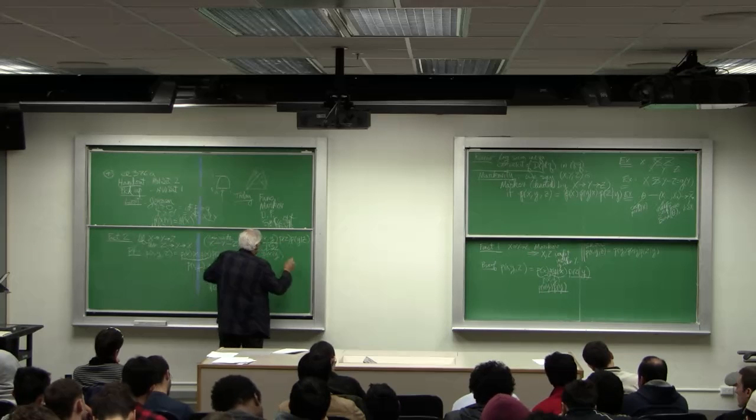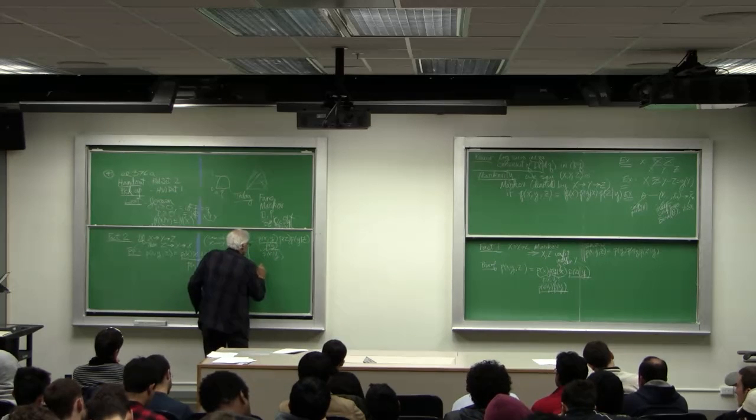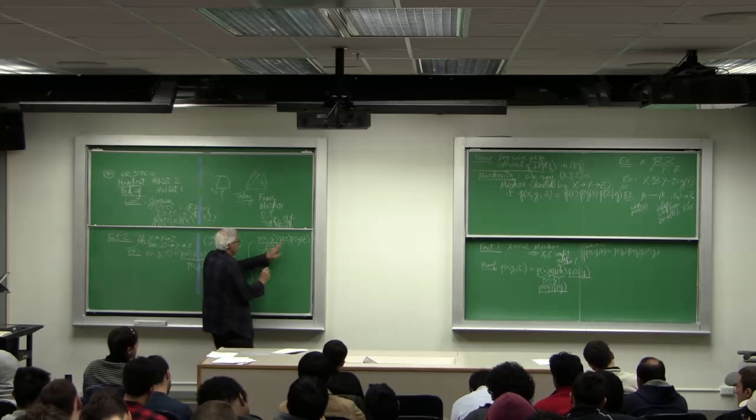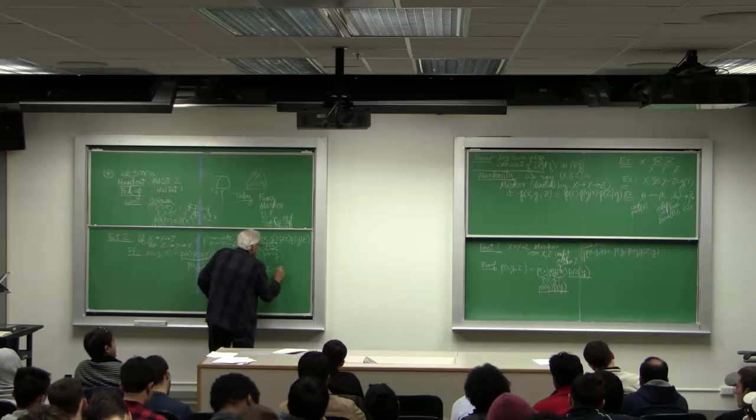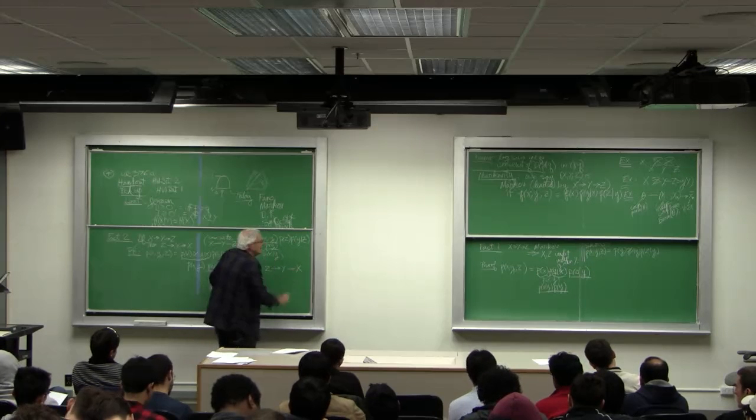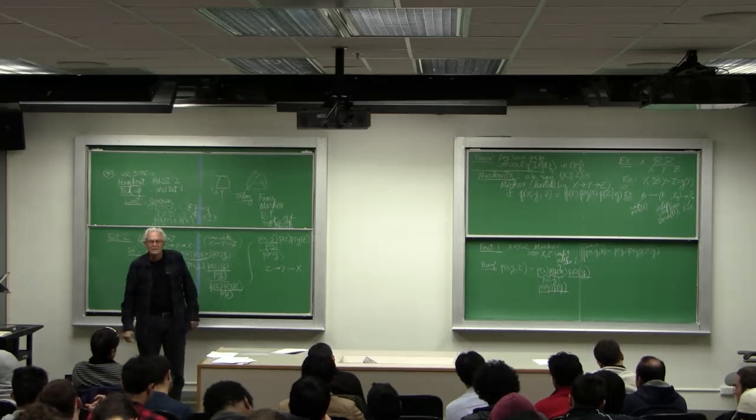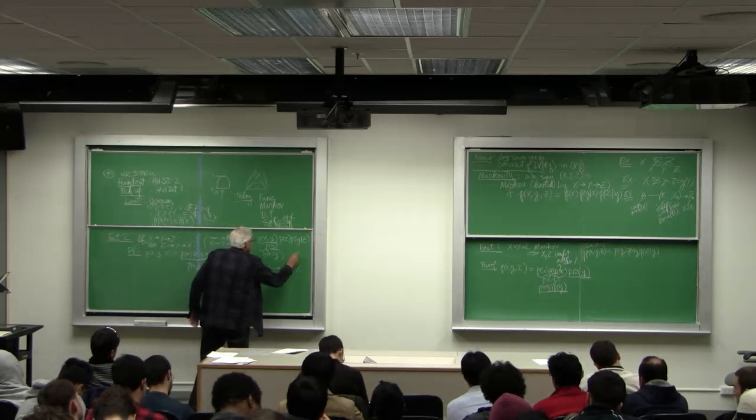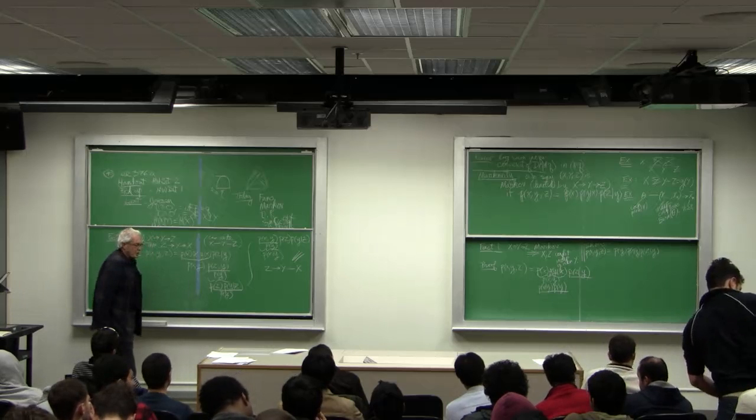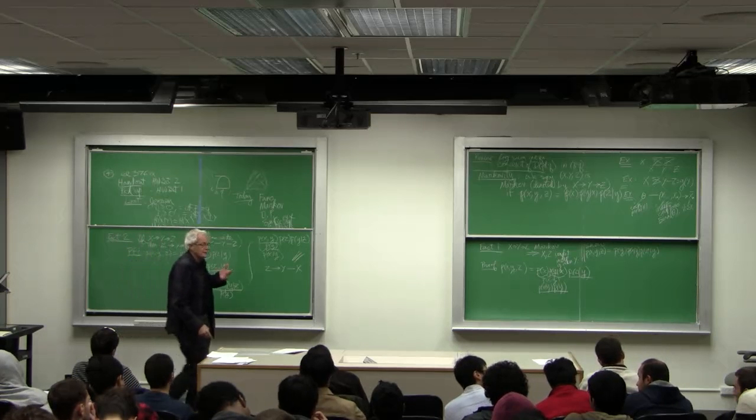So, look at this. This is equal to P of Z times P of Y given Z times P of X given Y. So, we've proved that. So, Markovity is the same backwards and forwards.